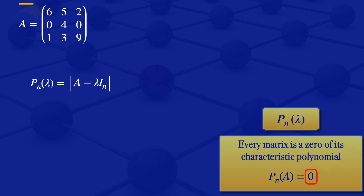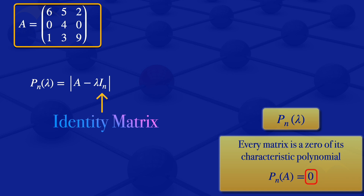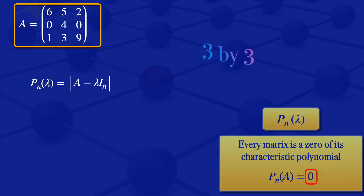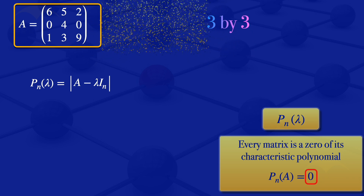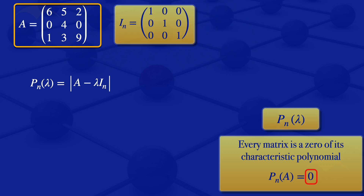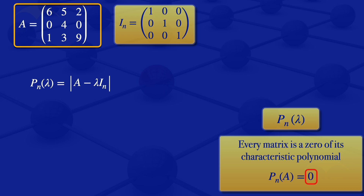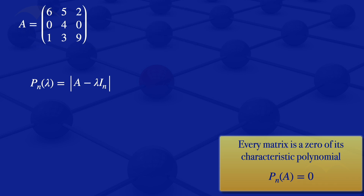In this case, our A is a 3 by 3 matrix. The I_n in the definition of the characteristic polynomial is the identity matrix with the same size as the given matrix. Since our given matrix is 3 by 3, we use the 3 by 3 identity matrix multiplied by lambda, which places lambdas on the diagonal. This results in subtracting lambda from the diagonal elements of matrix A.